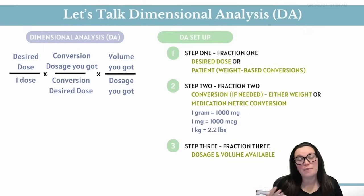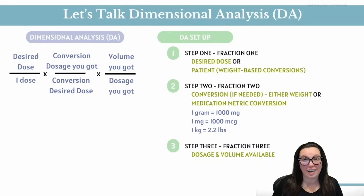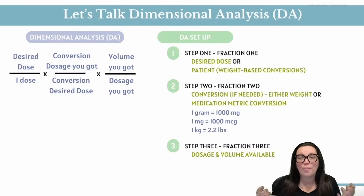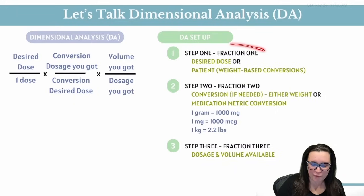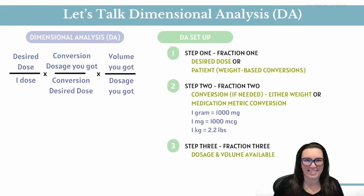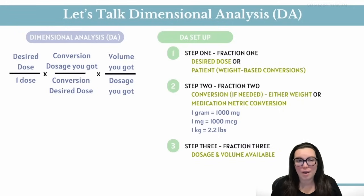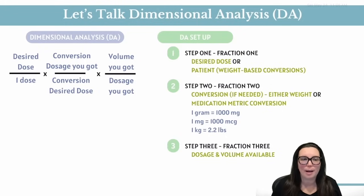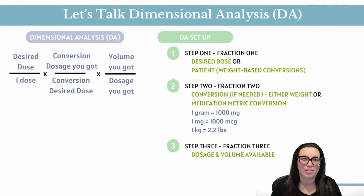Dimensional analysis is one of my favorite ways to calculate most dosage calculation equations because it's really your one-stop shop to solve all med problems without having to flip tables. So step one, we've got fraction one, which is either going to be our desired dose or a patient weight if we're doing weight-based calculations. This is going to be your why — what the provider ordered.